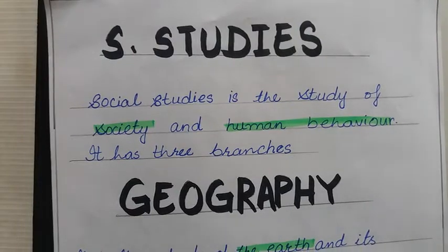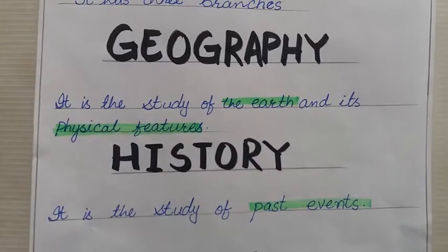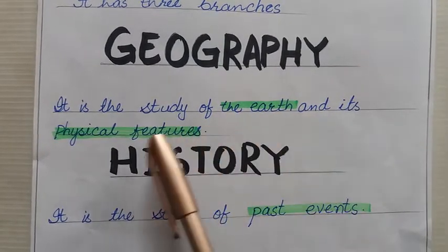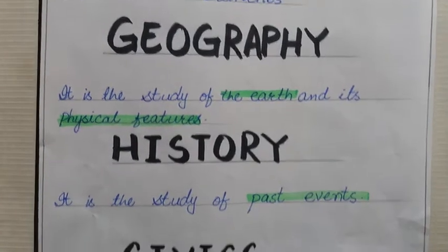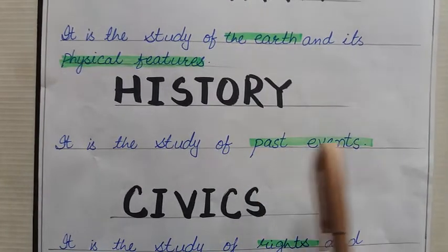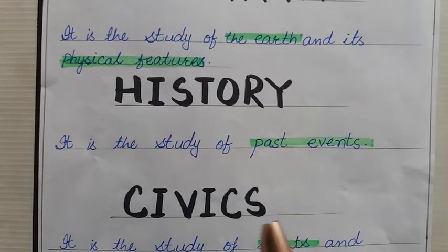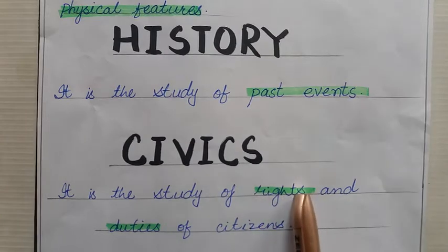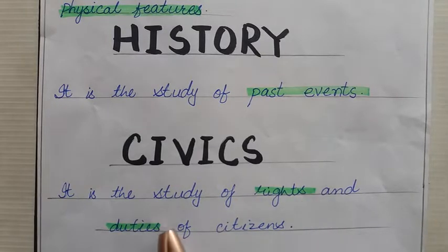What is social studies? Social studies is the study of society and human behavior. It has three branches. Number 1: Geography — geography is the study of the earth and its physical features. Number 2: History — history means the study of past events; past means 'guzra hoa zamana,' that is 'maazi.' The third one is civics — civics is the study of rights and duties of the citizens. Rights means 'huqooq' and duties means 'faraiz.'